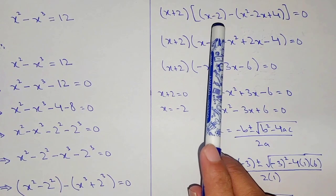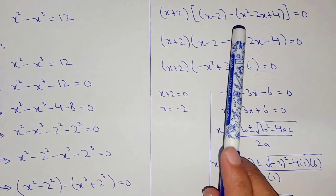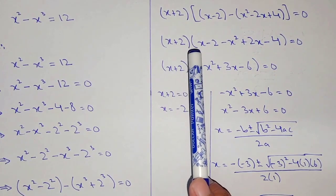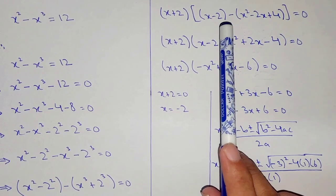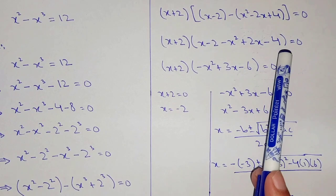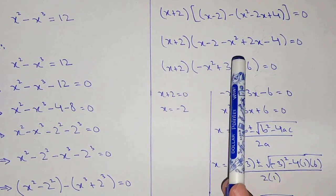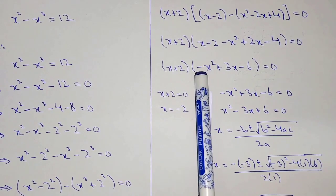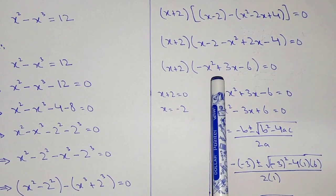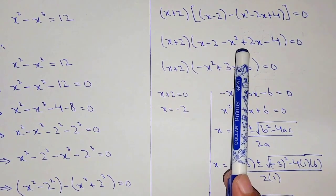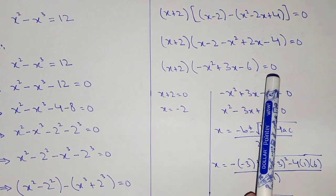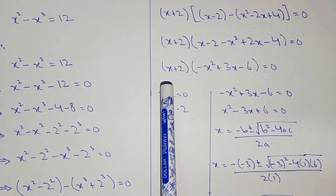Taking x plus 2 common from both terms: x plus 2 into x minus 2 minus x squared minus 2x plus 4 equal to 0. Expanding inside the bracket: x plus 2 into minus x squared plus x plus 2x minus 2 minus 4 equal to 0, which gives x plus 2 into minus x squared plus 3x minus 6 equal to 0.